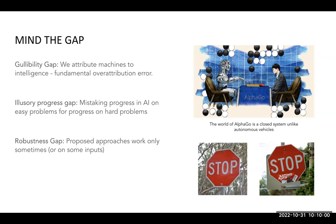The second gap is the illusory progress gap: mistaking progress on easy problems for progress on hard problems. AlphaGo defeated the world champion, leading people to think we were close to solving complex real-world problems. But AlphaGo is a closed system with only so many possible moves. Comparing it against autonomous driving — where edge cases are infinite — humans can act in novel edge cases without prior training data, but AI cannot.